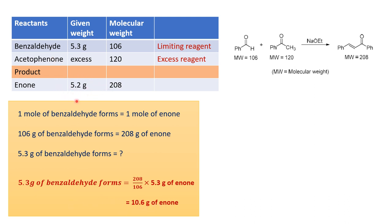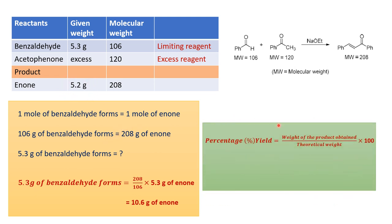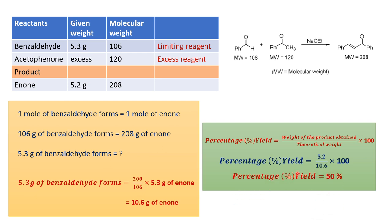But what has been obtained here is only 5.2 grams. So what is the yield? Percentage yield is nothing but the weight of the product obtained divided by the expected or theoretical yield, multiplied by 100. Here, the weight of the product is 5.2 grams and the theoretical yield is 10.6 grams. Overall, the percentage yield of this product is 50 percent. This is how we calculate the percentage yield of any chemical reaction.